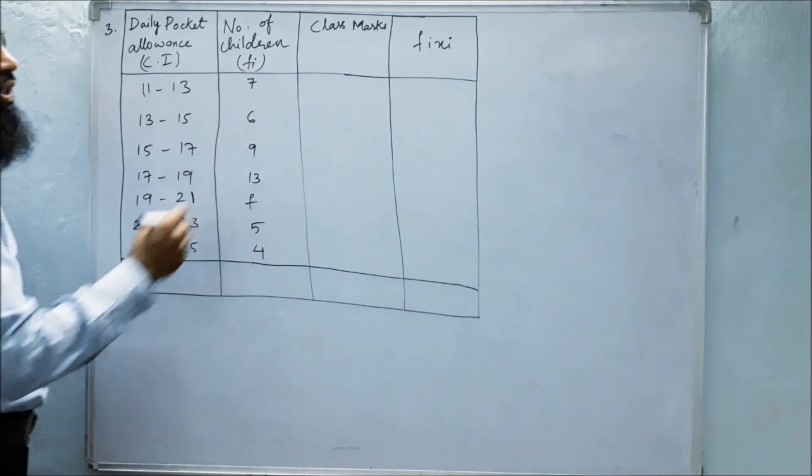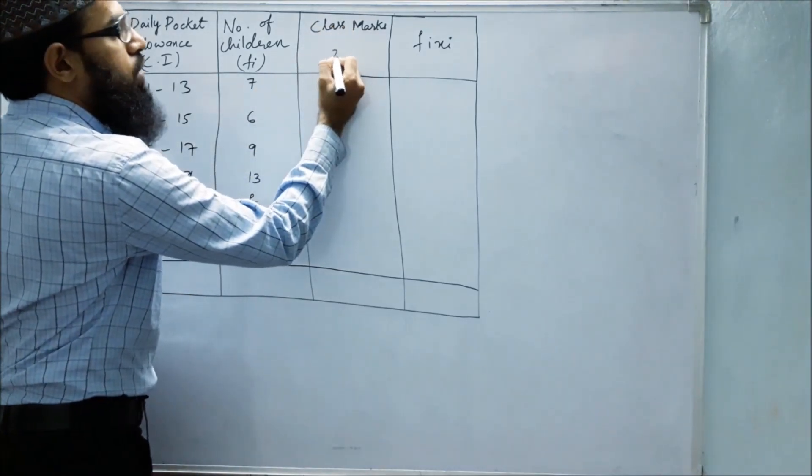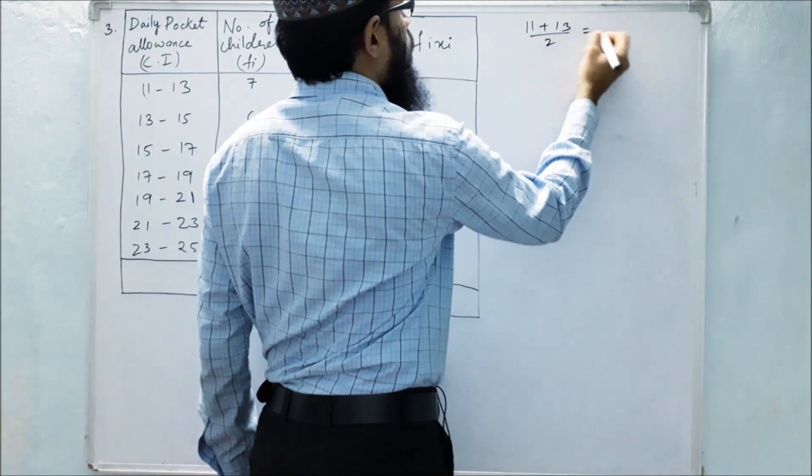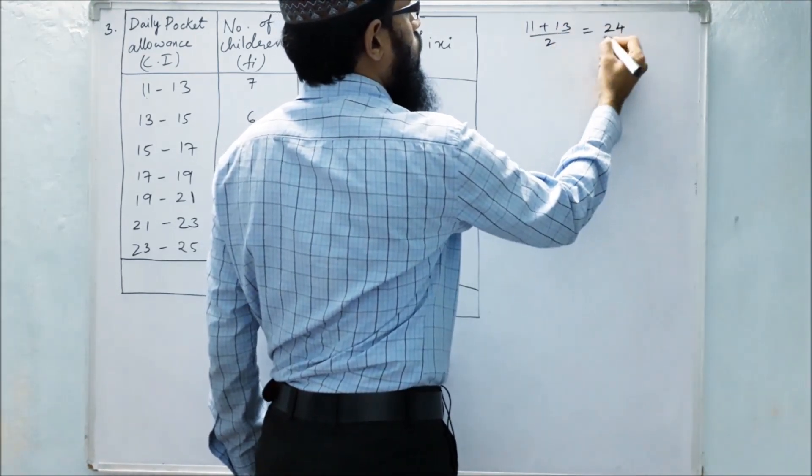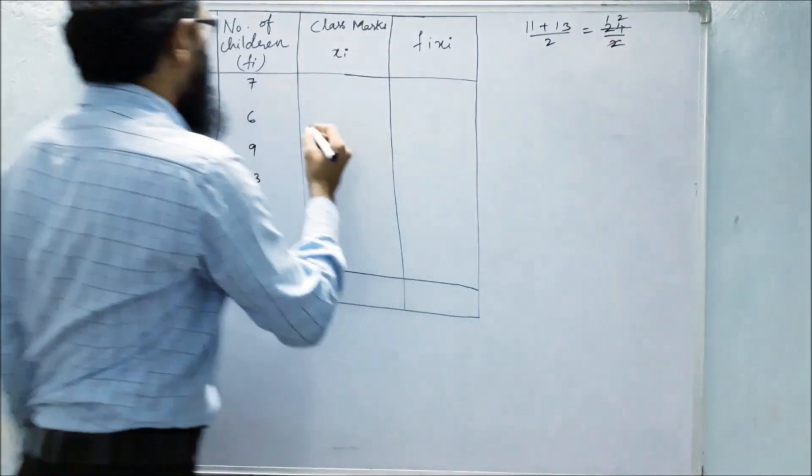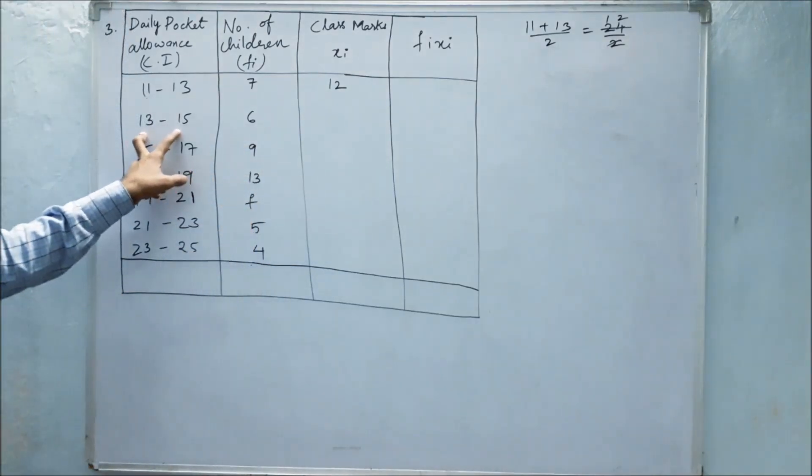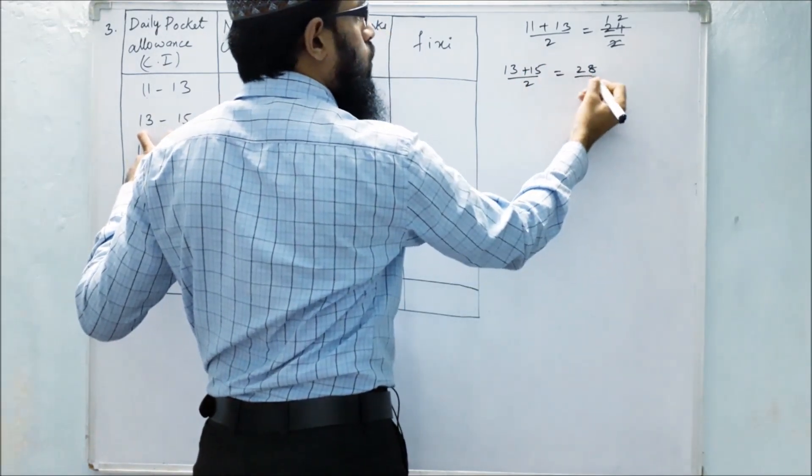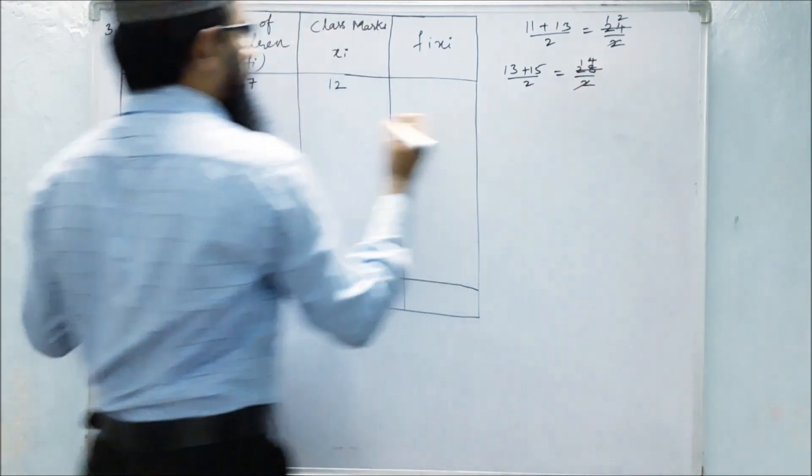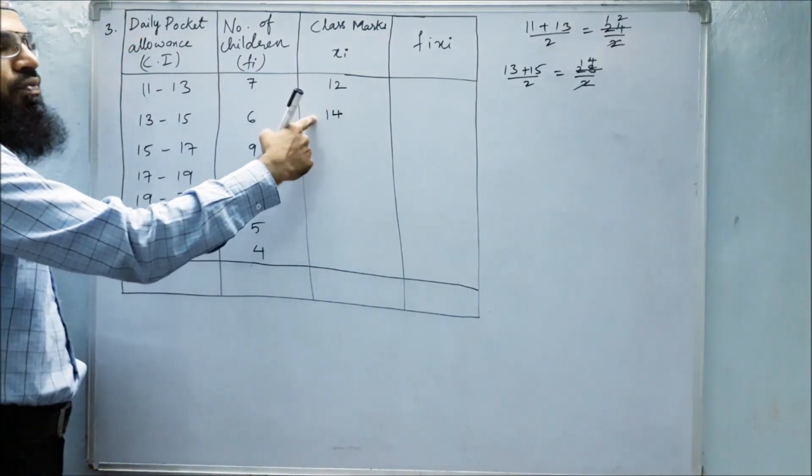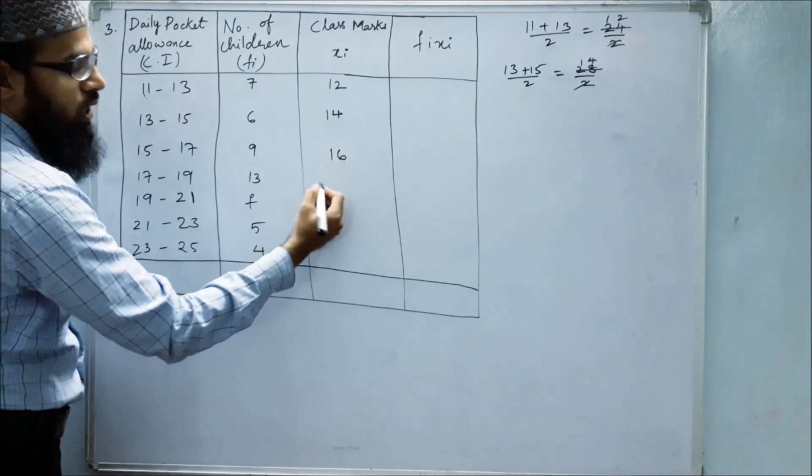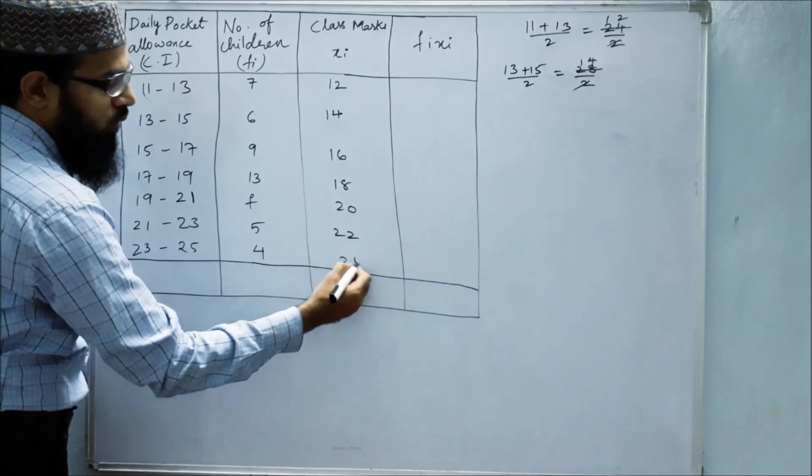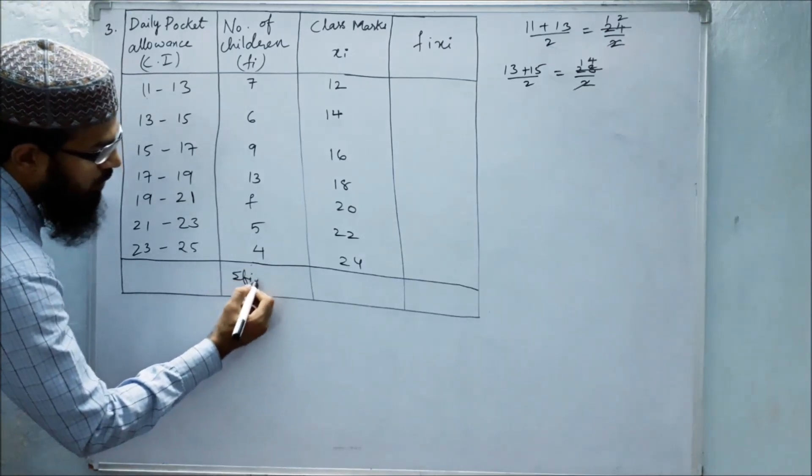First, for solving this, let us find out class marks, that is the mid value. How we will find out: 11 plus 13 by 2 equals 12. Next, 13 plus 15 divided by 2 equals 14. Here the difference is of 2, so let's add 2 to get the next numbers: 16, 18, 20, 22, 24.